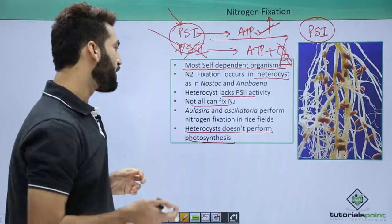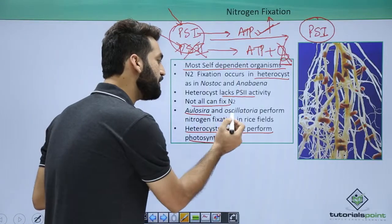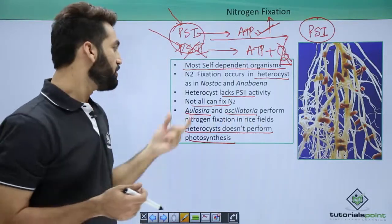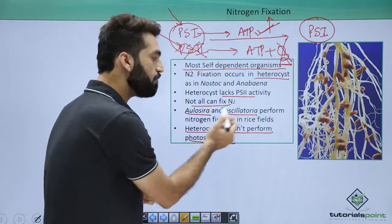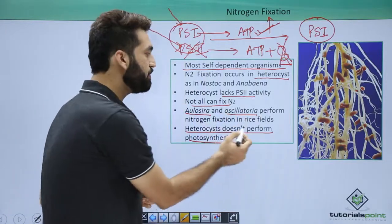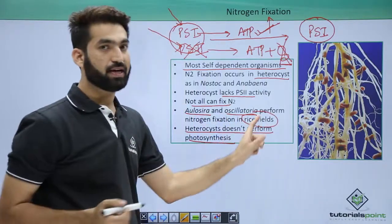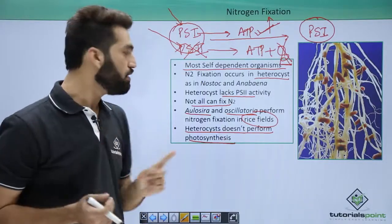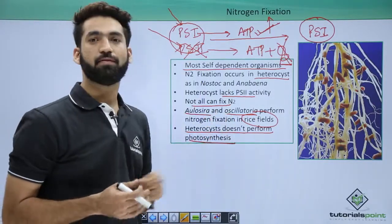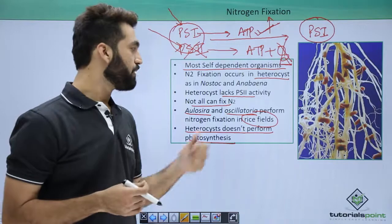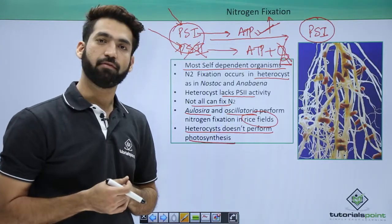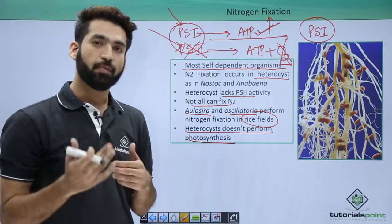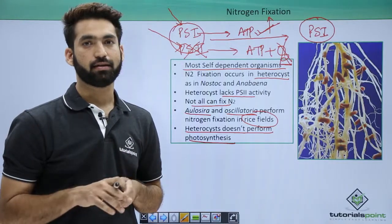Two important names to remember are Anabaena and Oscillatoria — they have been asked in exams. They are cyanobacteria that fix nitrogen in paddy fields, also called rice fields. In the next session we'll be discussing how reproduction takes place in cyanobacteria.